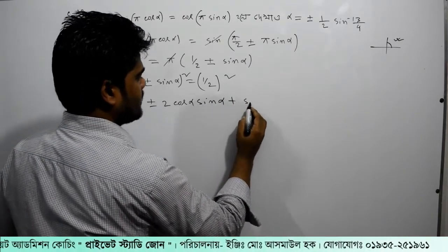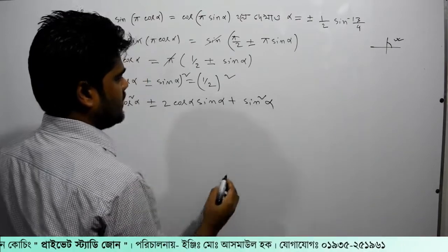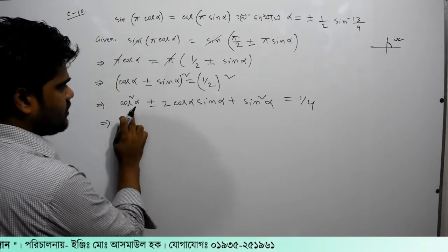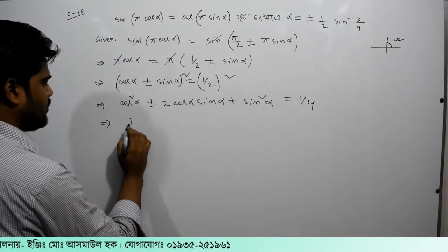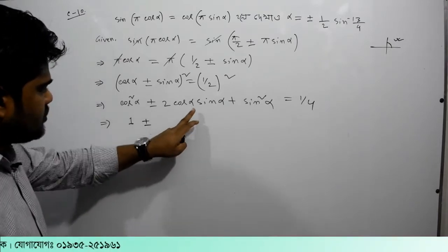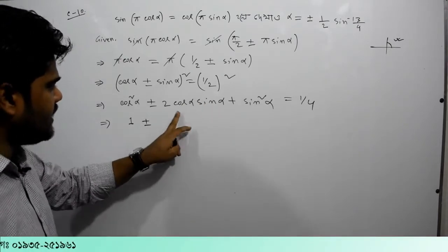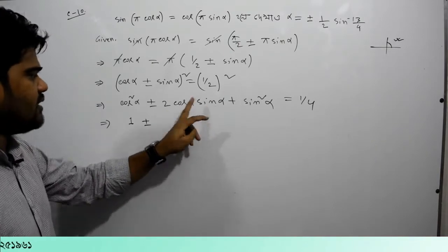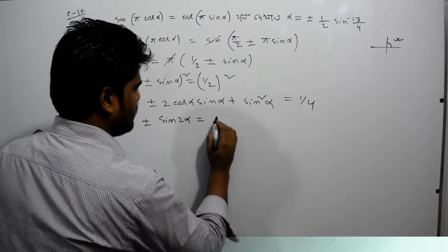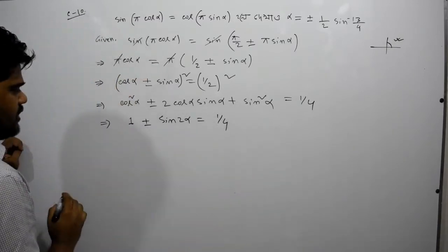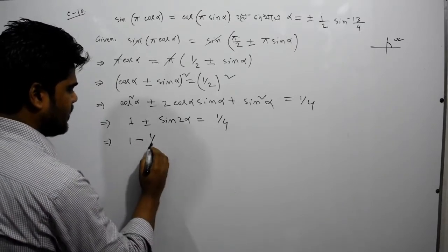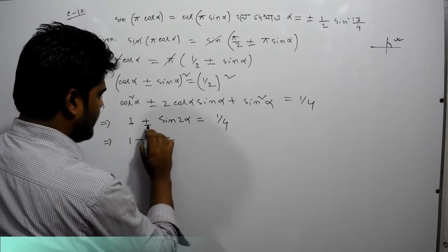b plus b squared. And we have to say one by four. This is cos squared plus sin squared equal to 1, plus minus 2. So here we can see that 2 sin cos — 2 sin alpha is equal to sin 2 alpha.